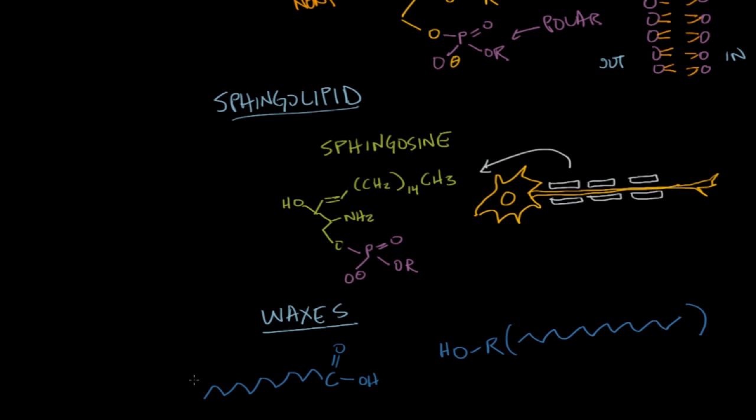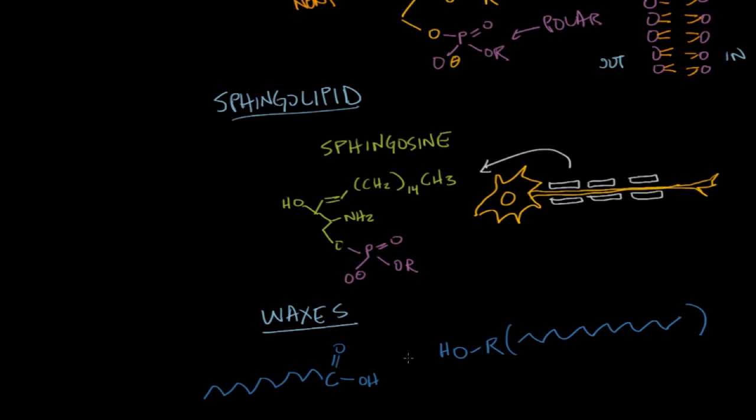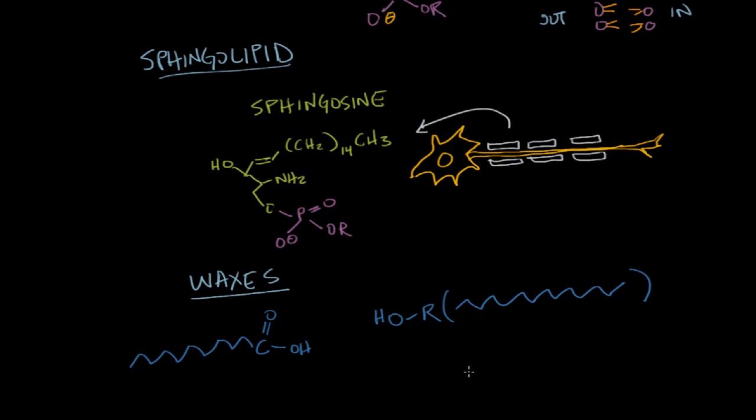And if you form an ester out of these two molecules, you end up with a product that looks a little something like this: a long chain double bonded to an oxygen with an OR group right here. This would be the ester. So you've got an ester right here, but it's a unique ester in the sense that it's got two really long carbon chains making it two nonpolar sections here.